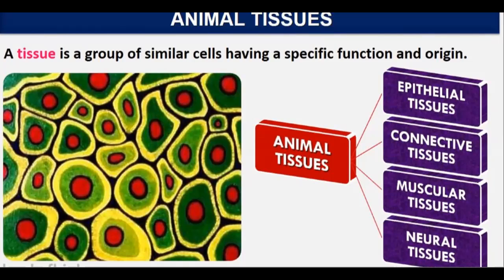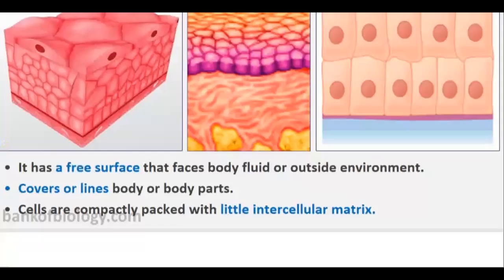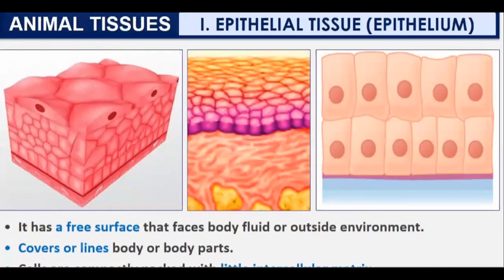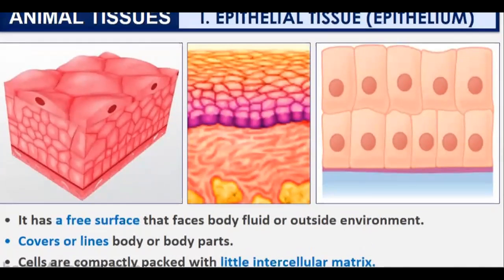Animals have four types of tissues: epithelial tissue, connective tissue, muscular tissue, and neural tissue. The first one is epithelial tissue, also called epithelium. It has surfaces that face body fluid and the outside environment, because it is the outermost layer.